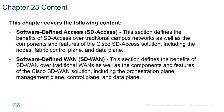This chapter covers the following content. Fabric technologies in Cisco include Software Defined Access or SD-Access and Software Defined WAN or SD-WAN. This section defines the benefits of SD-Access over traditional campus networks, as well as the components and features of the Cisco SD-Access solution including the nodes, fabric control plane, and data plane. For SD-WAN, this section defines the benefits over traditional WANs, as well as its components including the orchestration plane, management plane, control plane, and data plane.